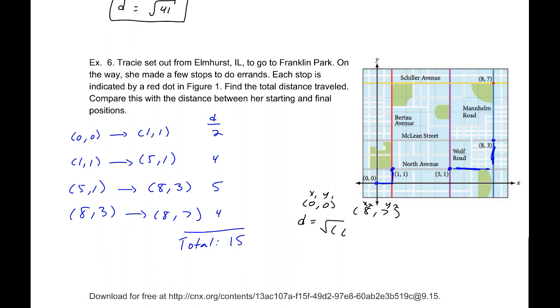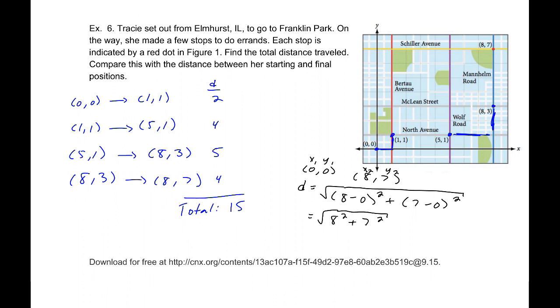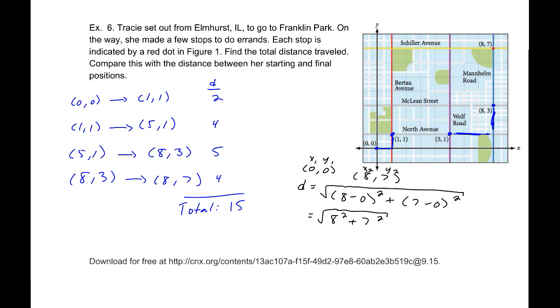plus our vertical displacement so 7 - 0 squared. And that would be the square root of 8² + 7² and again, I'm dropping those parentheses because they are both perfect squares or not, because they're both positive. Now, these both will be perfect squares. So, that would be 64 and 49 so this will be the square root of 113.